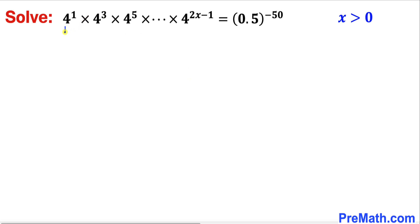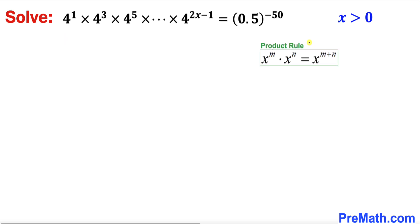Let's focus on the left hand side of this equation and recall the product rule of exponents — we are going to apply it on the left hand side. So the left hand side can be written as 4 power 1 plus 3 plus 5, all the way to 2x minus 1, which equals 2.